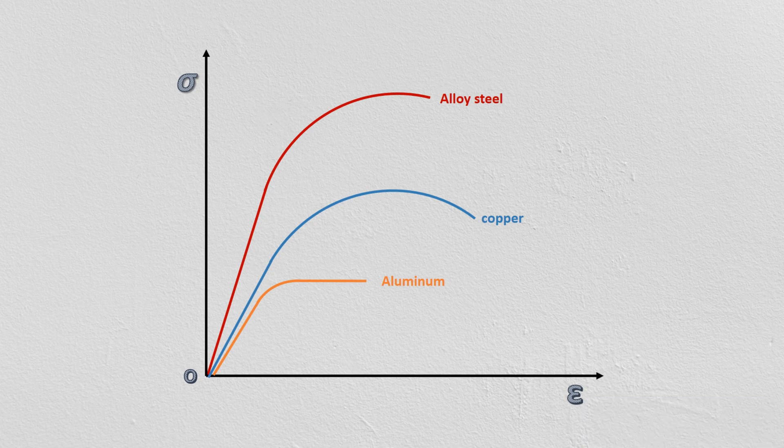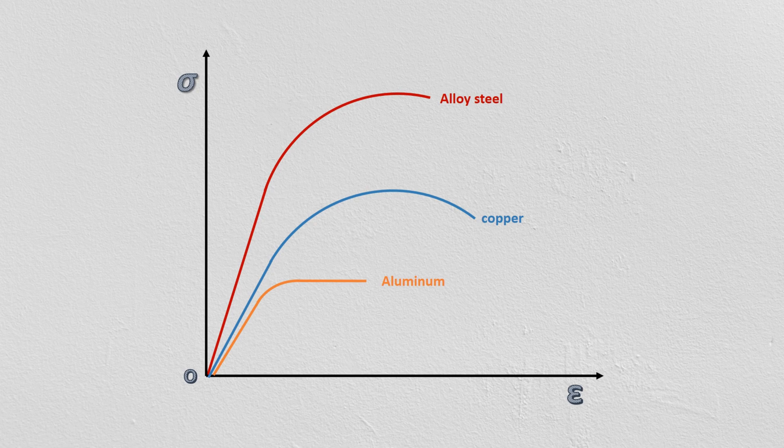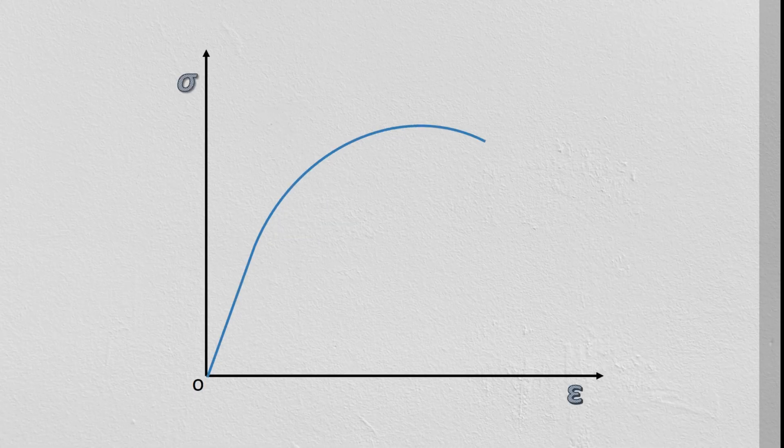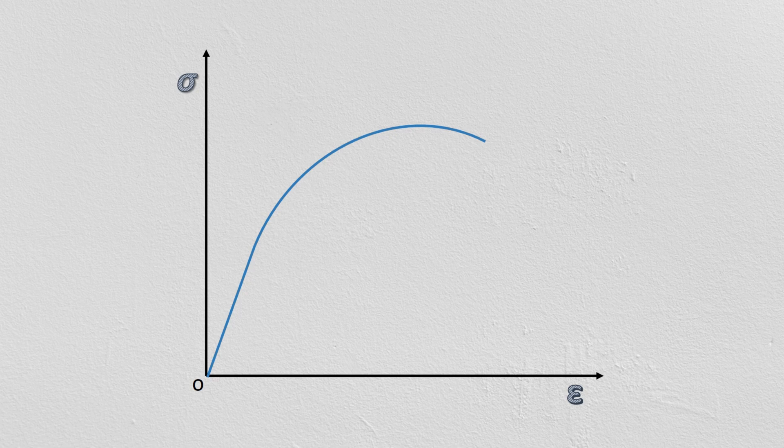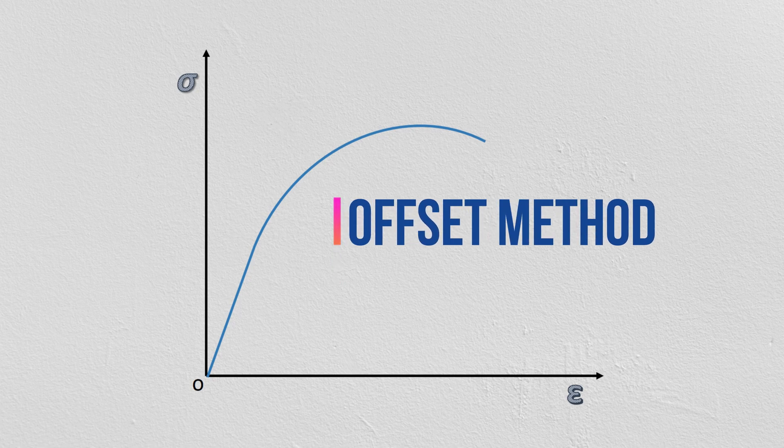As you can see here, this graph doesn't have a clear yield point. In such cases, where stress and strain curve doesn't have a clear yield point, the yield strength can be determined by an offset method.